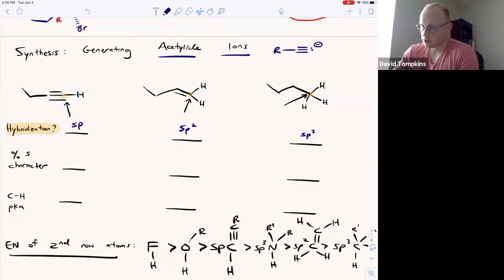So the percentage of s character in an sp hybrid orbital is 50% s and 50% p, whereas if it's sp2, one part s, two parts p, then it's going to be 33% s. And if it's sp3, one part s, three parts p, it is 25% s.